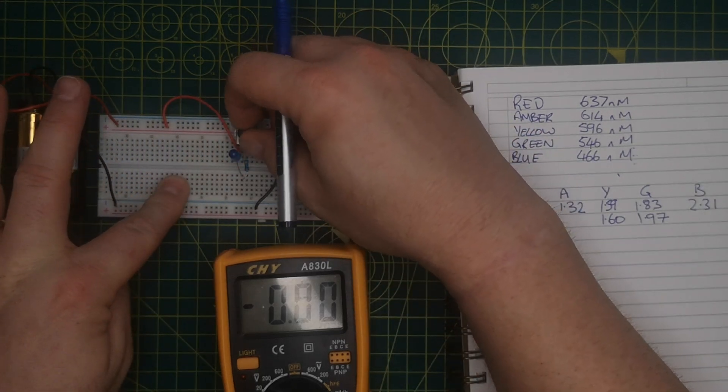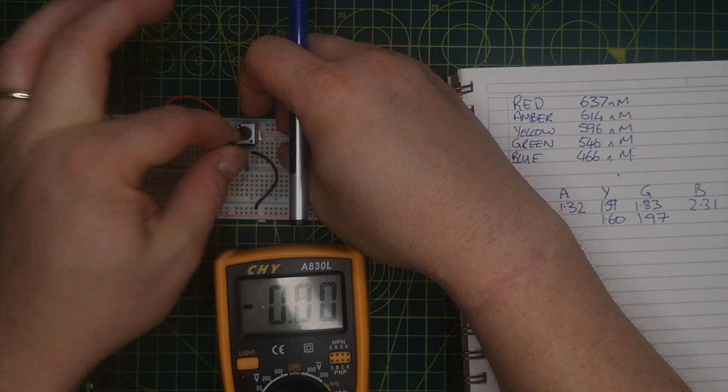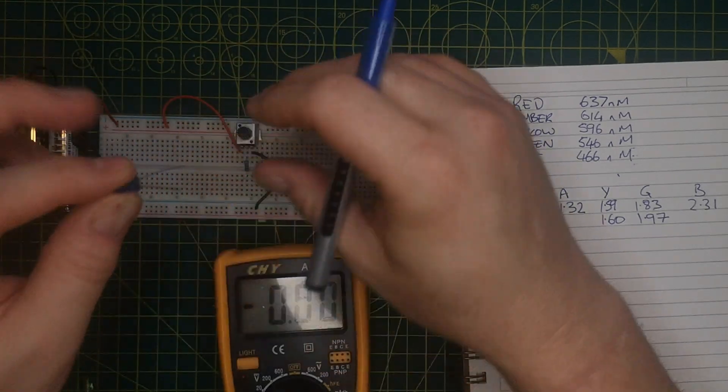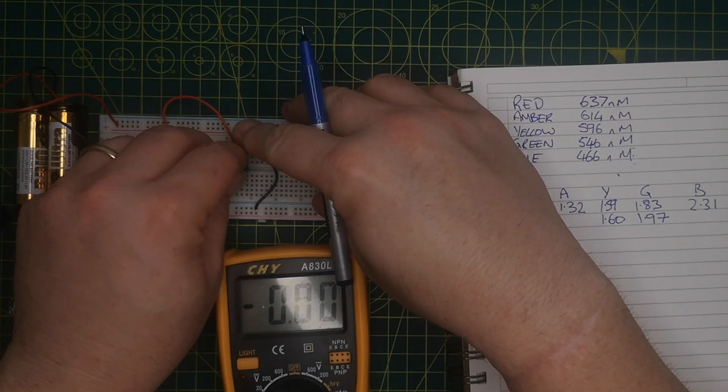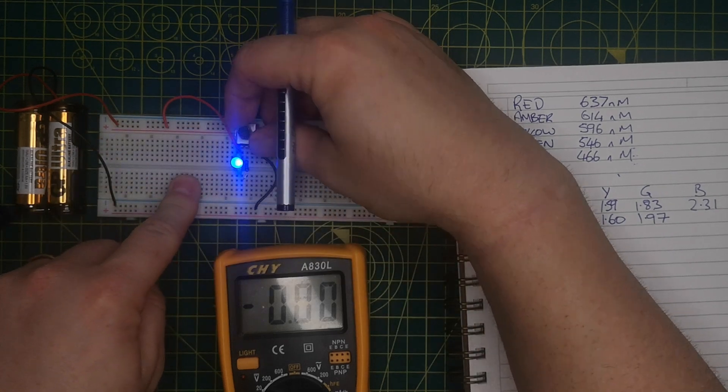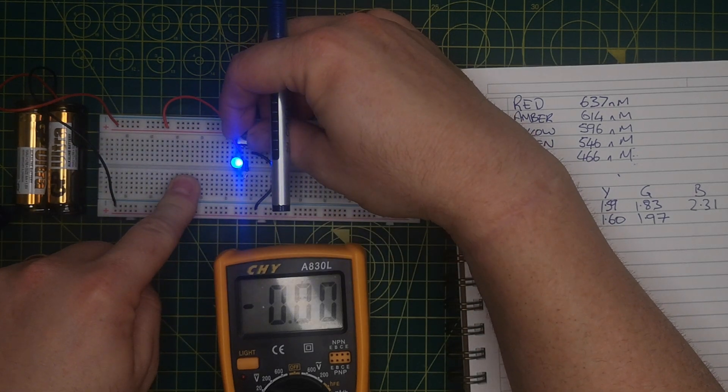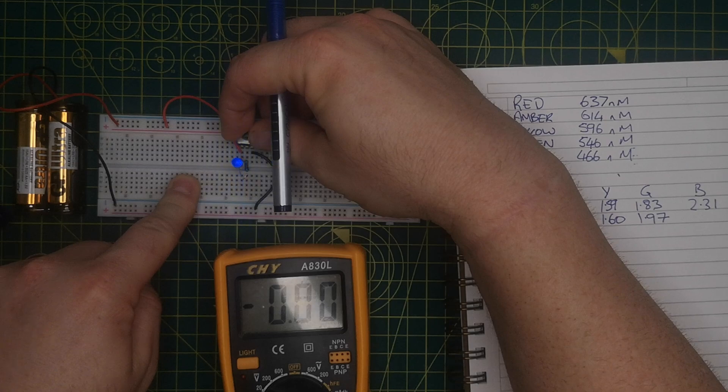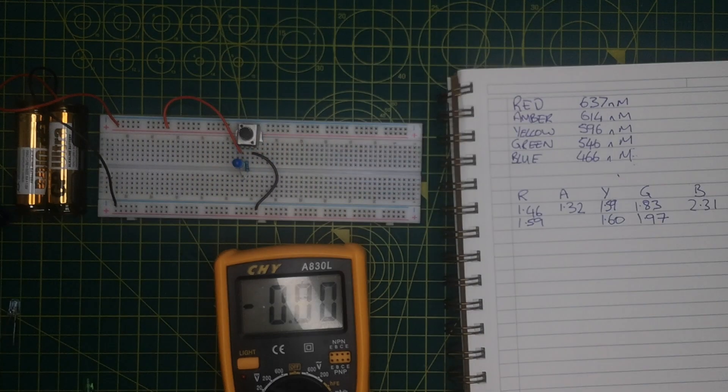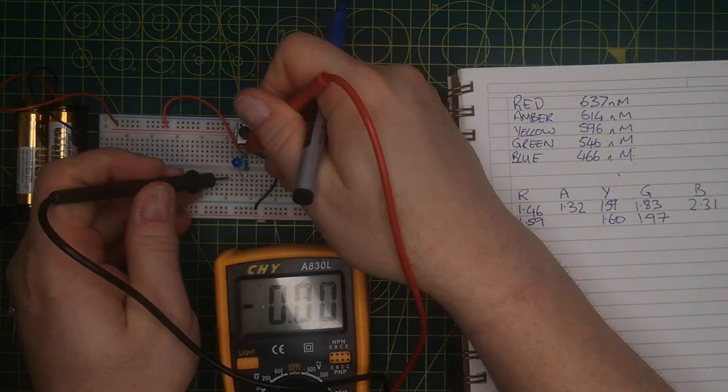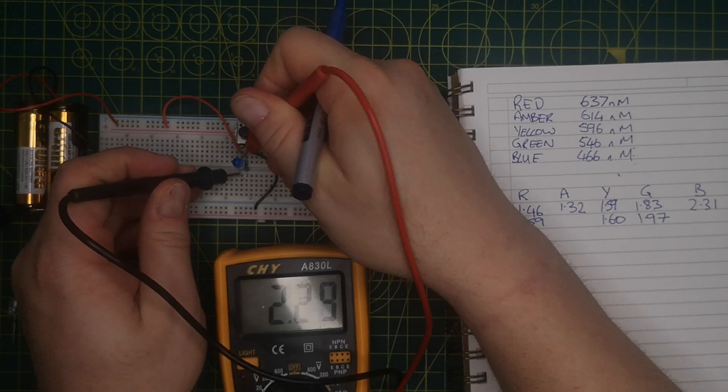Adjust it till it lights. Oh, have I got it around the wrong way? No, I haven't. Pop them in there, pop them in there. Adjust it till it lights. Adjust off. Measure the voltage. 2.29.